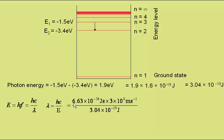6.63 times 10 to the minus 34 joule seconds, times the speed of light in a vacuum of 3 times 10 to the 8 meters per second, divided by the photon energy found previously of 3.04 times 10 to the minus 19 joules. This gives a wavelength of 654 nanometers.